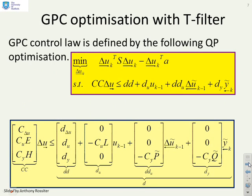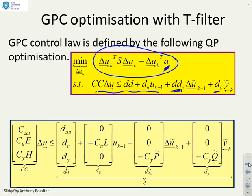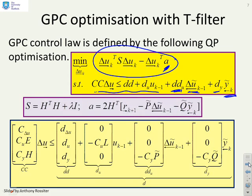Putting everything together, we have a quadratic performance index where the quadratic bit looks the same. The only subtlety is that A is computed slightly differently, and the terms DDU and DY are slightly different, involving delta-U-tilde-past and Y-tilde-past. But otherwise, it's pretty much the same structure as before.